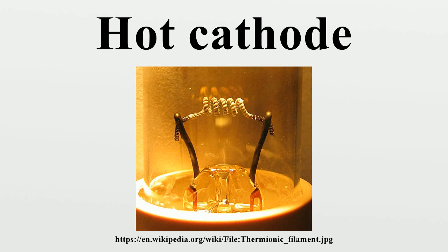In an indirectly heated cathode, the filament is not the cathode but rather heats a separate cathode consisting of a sheet metal cylinder surrounding the filament, which then emits electrons. Indirectly heated cathodes are used in most low-power vacuum tubes. For example, in most vacuum tubes the cathode is a nickel tube heated by a tungsten filament inside it, and the heat from the filament causes the outside surface of the tube to emit electrons.